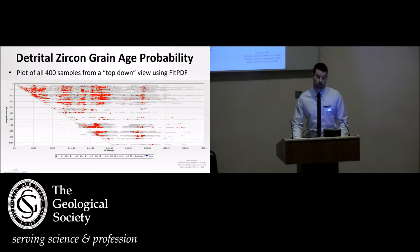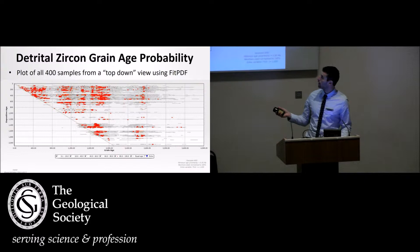You're likely all familiar with probability plots regarding detrital zircon. This is just a different way of looking at it that Bruce has already discussed. Essentially, we're looking at a top-down view with deposition age on the y-axis, grain age on the x-axis, and high probability peaks highlighted in red.